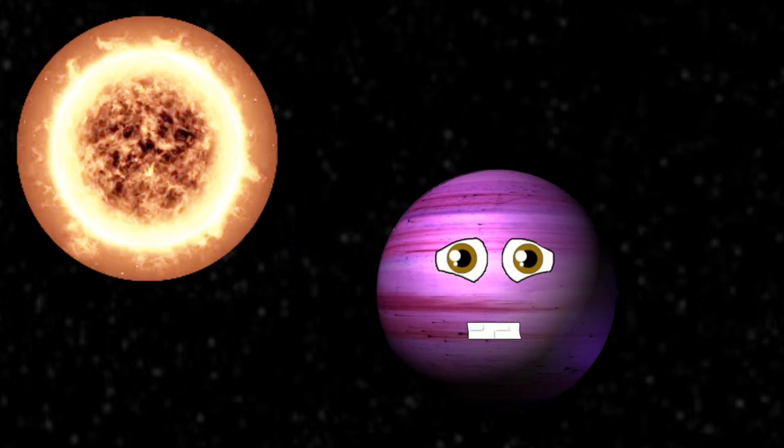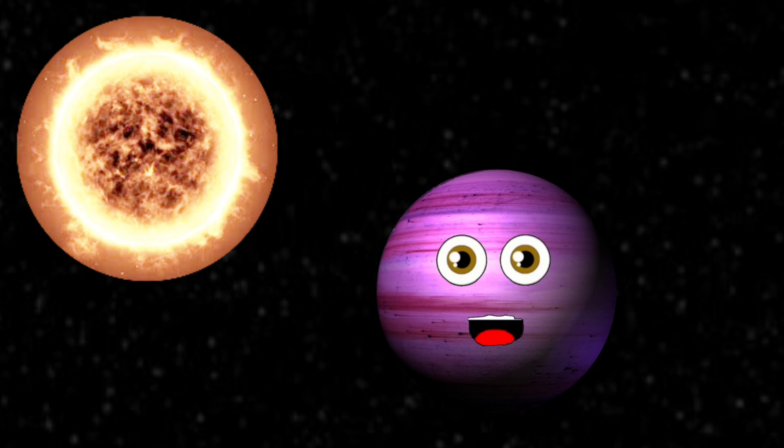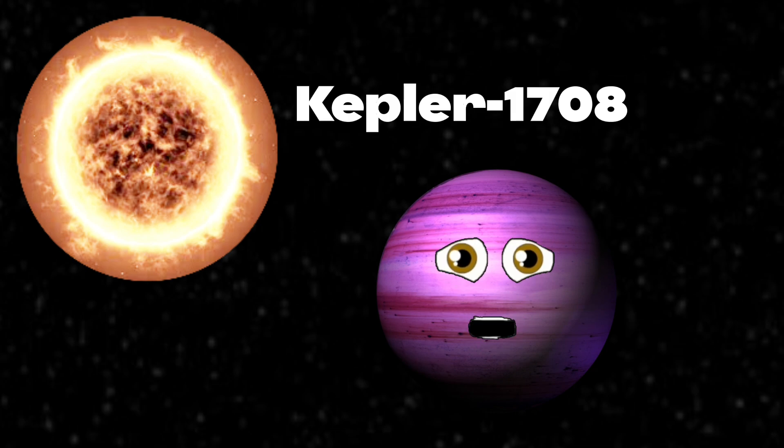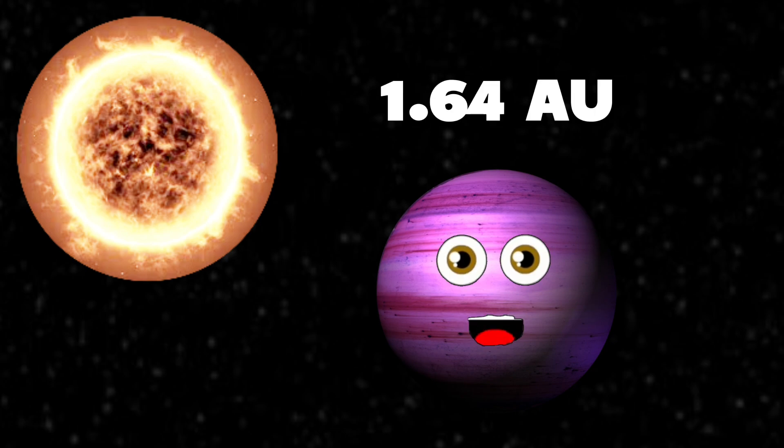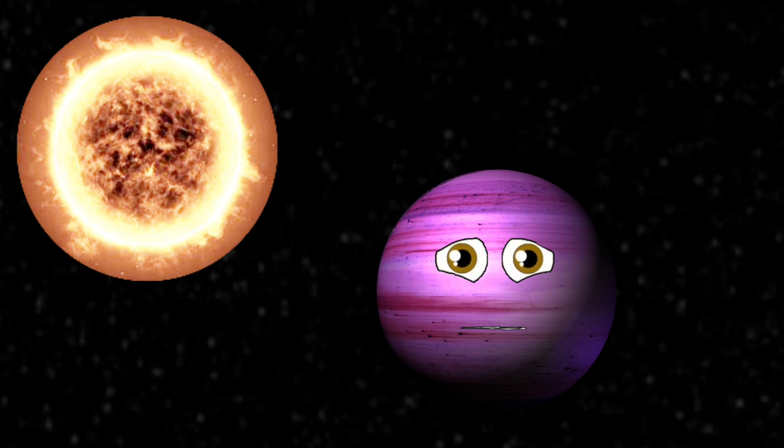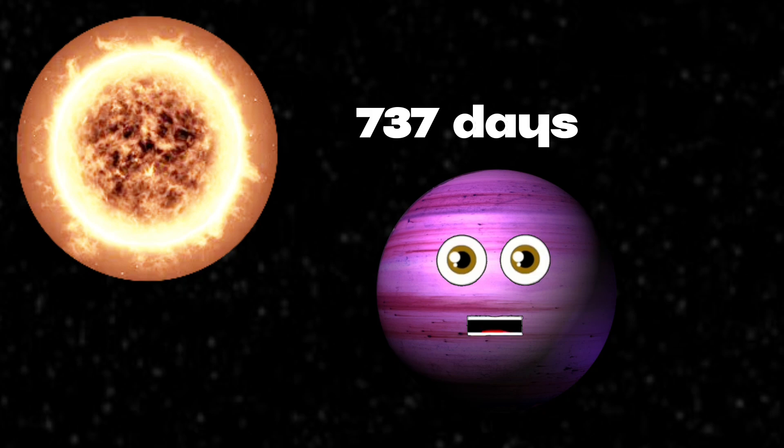I orbit a sun-like star, now it's called Kepler-1708, in which I'm proud. I orbit 1.64 astronomical units away from my host star, in its system. I complete one revolution every 737 days or two years, as I spin on my way.